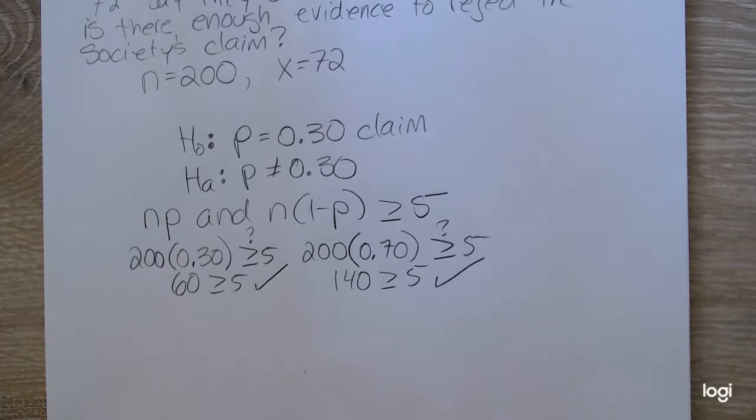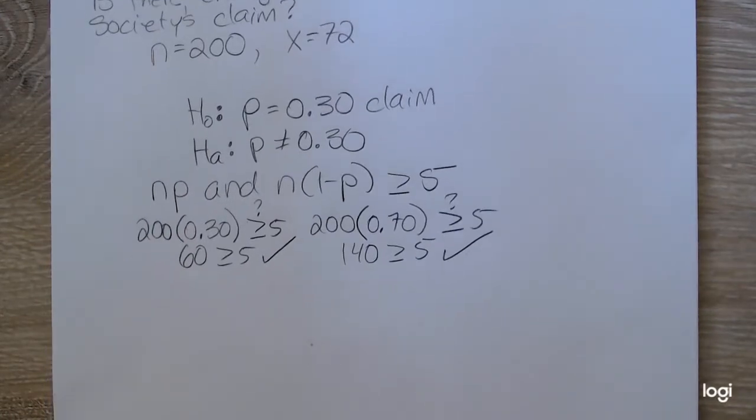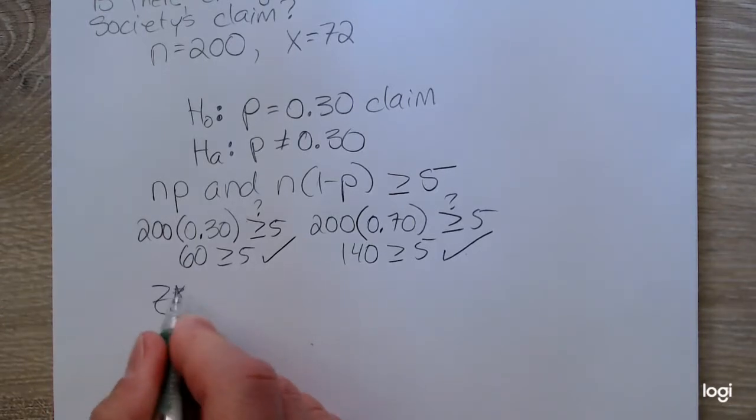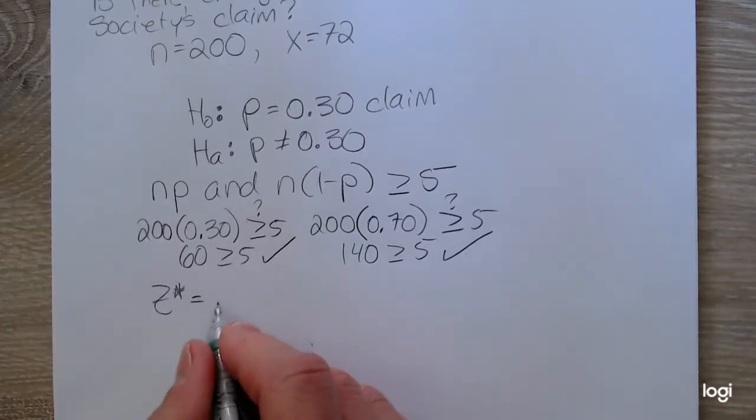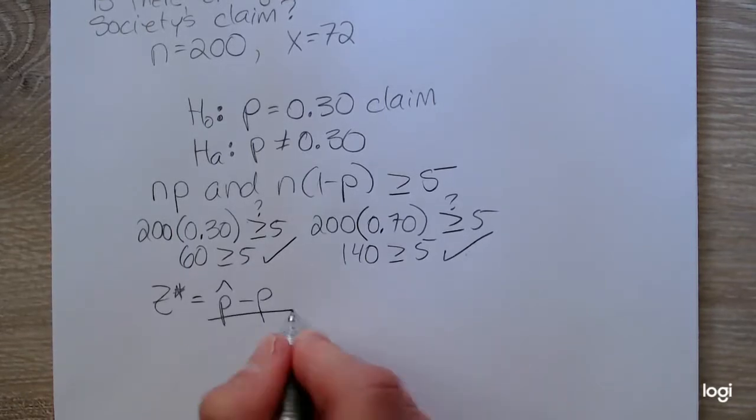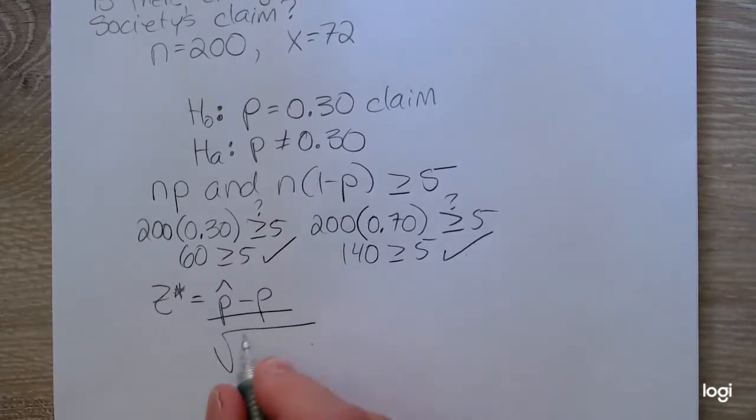So the conditions are met so that we could use a one-proportion Z-test, is what the TI-84 calls it. Our standardized test statistic will follow the Z distribution. And it's our sample proportion minus the hypothesized proportion over the square root of P times 1 minus P over N.